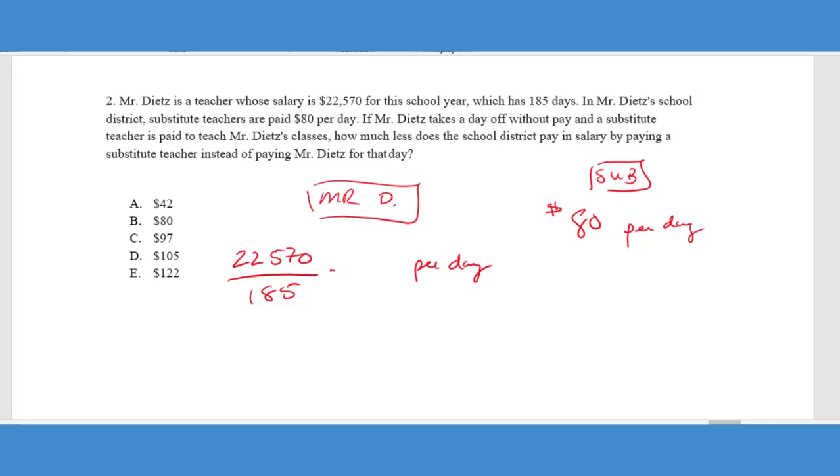And we can now take that $122 and subtract the $80 that we're paying the sub and we can see that the difference is $42 difference or $42 less paying the sub and that would be answer choice A in this case.